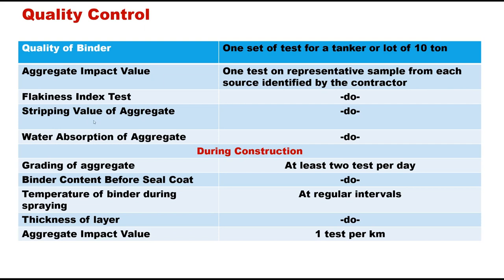During construction, certain quality control tests are required. Before construction, aggregate impact value should be tested on a representative sample from each source. Flakiness index, stripping value, and water absorption of aggregate should also be determined for each source. During construction, grading of aggregate and binder content before seal coat should be tested at least twice per day. Temperature of binder during spraying and thickness of layer should be checked regularly, and impact test must be conducted once per kilometer.